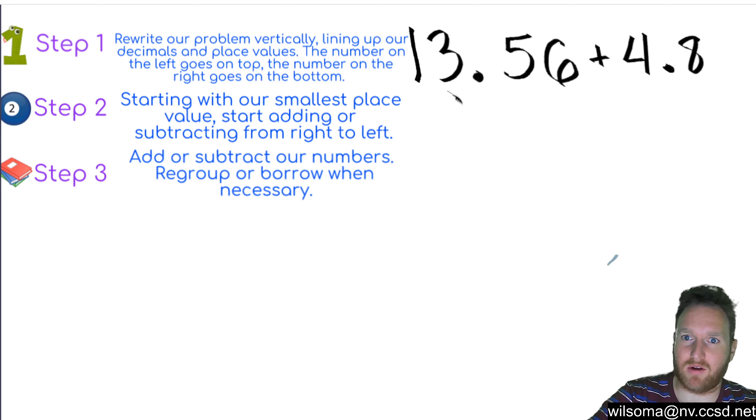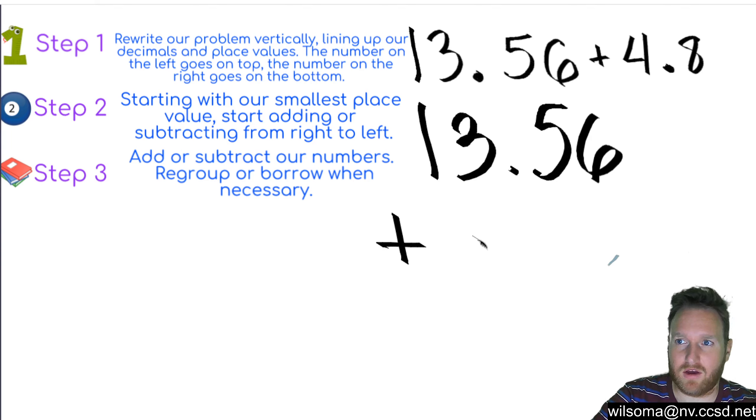So our step one, it says rewrite our problem vertically. So we got 13.56, we're going to add to that 4.8. Now we've got to make sure to line up our decimals. So our decimals have to be lined up.